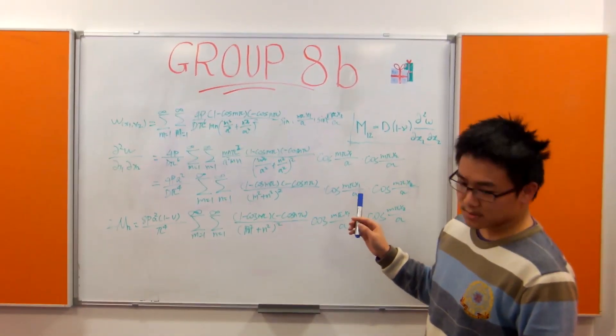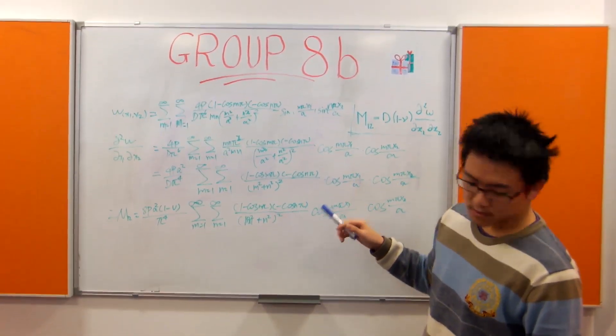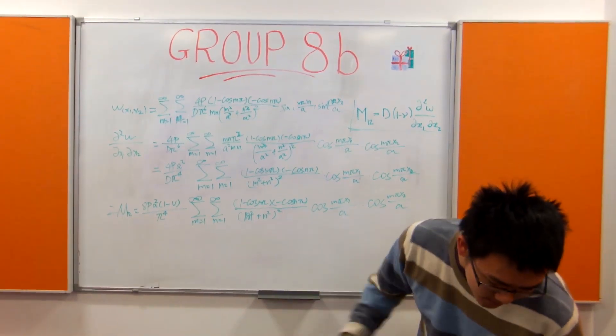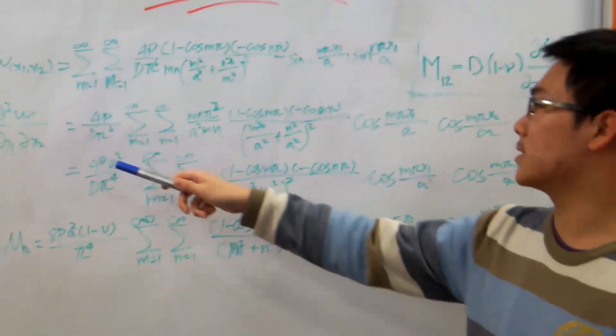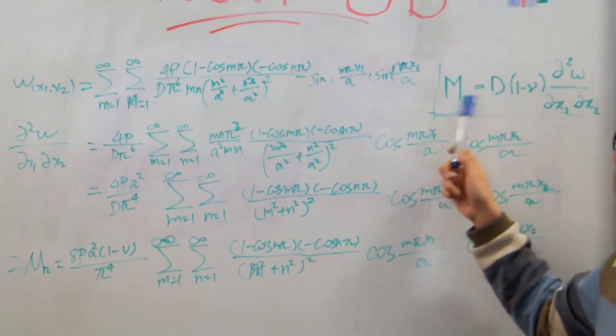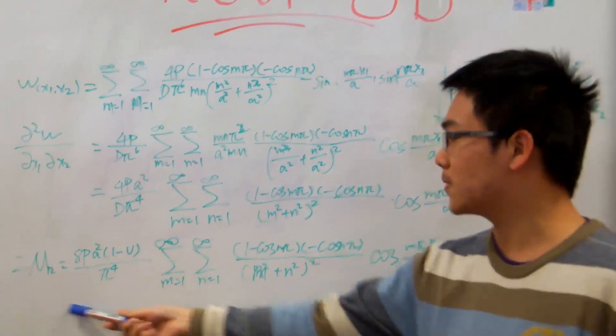Then, because here the corner force is equal to 2m12, so we just use this equation, and substitute this into this, and 2m12 is equal to here.